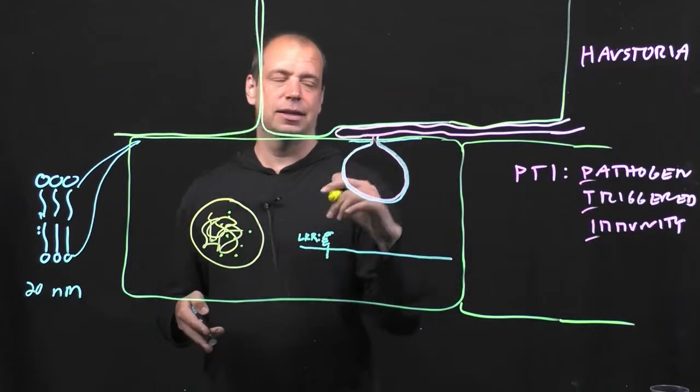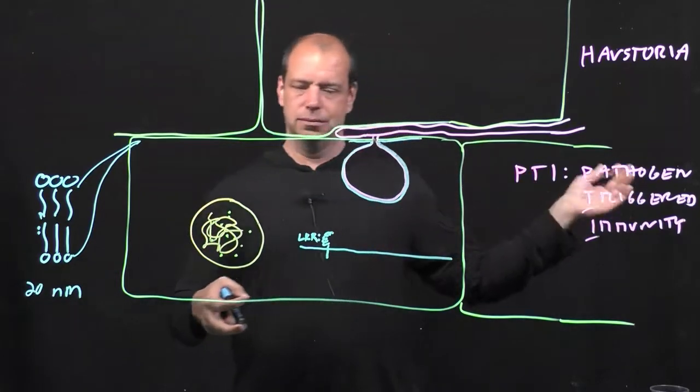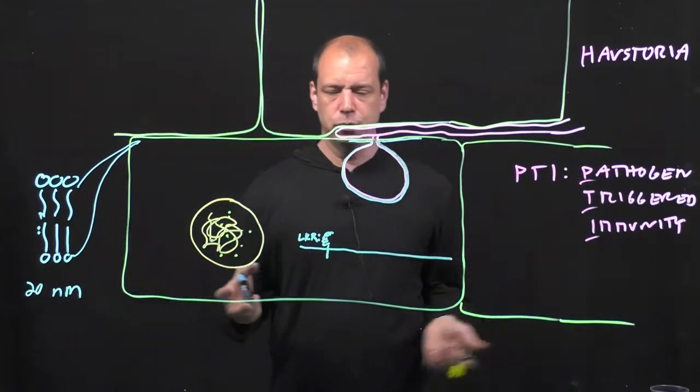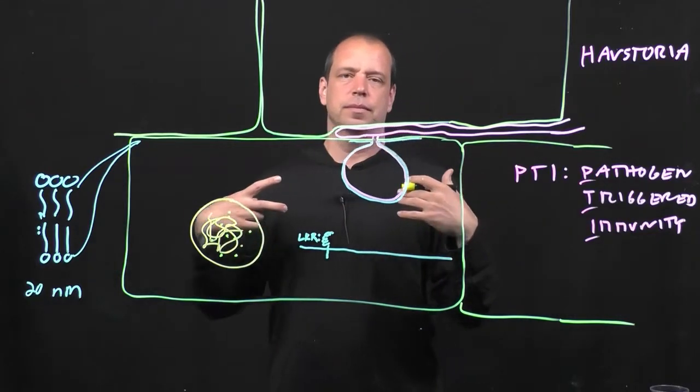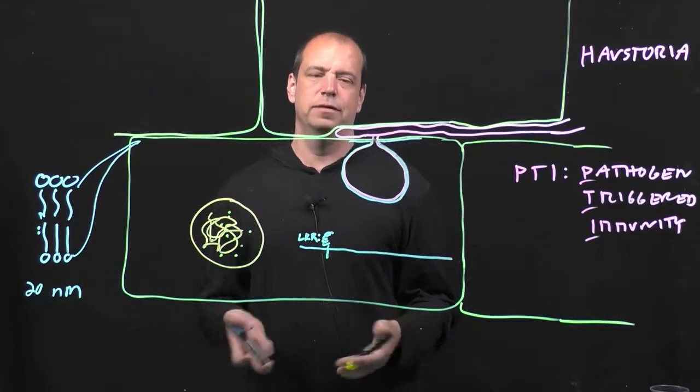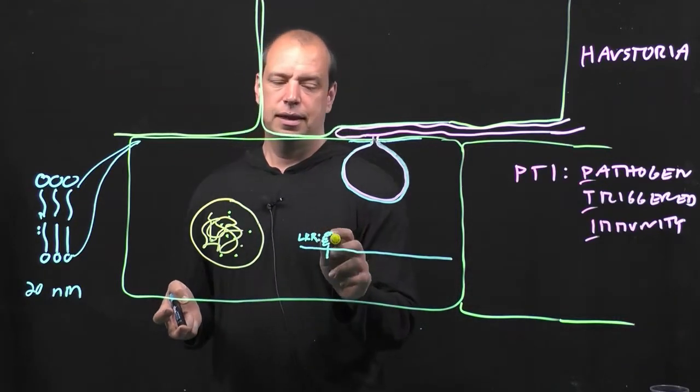Typically, the signal is not specific. The signal is not, we're under attack by Bremia lactucae A4. It's just a signal, there's a pathogen, we're being eaten alive, let's do something about it. And in this case, typically, there's a number of generalized defense responses.